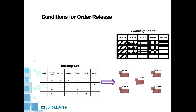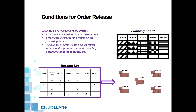There is a backlog list of orders waiting to be released into the system. To release an order from this list, it must fulfill three conditions: it must have reached its planned due date, it must obtain cards for the stations in its processing route, and the number of cards it obtains for each station must reflect its workload implication on that workstation.